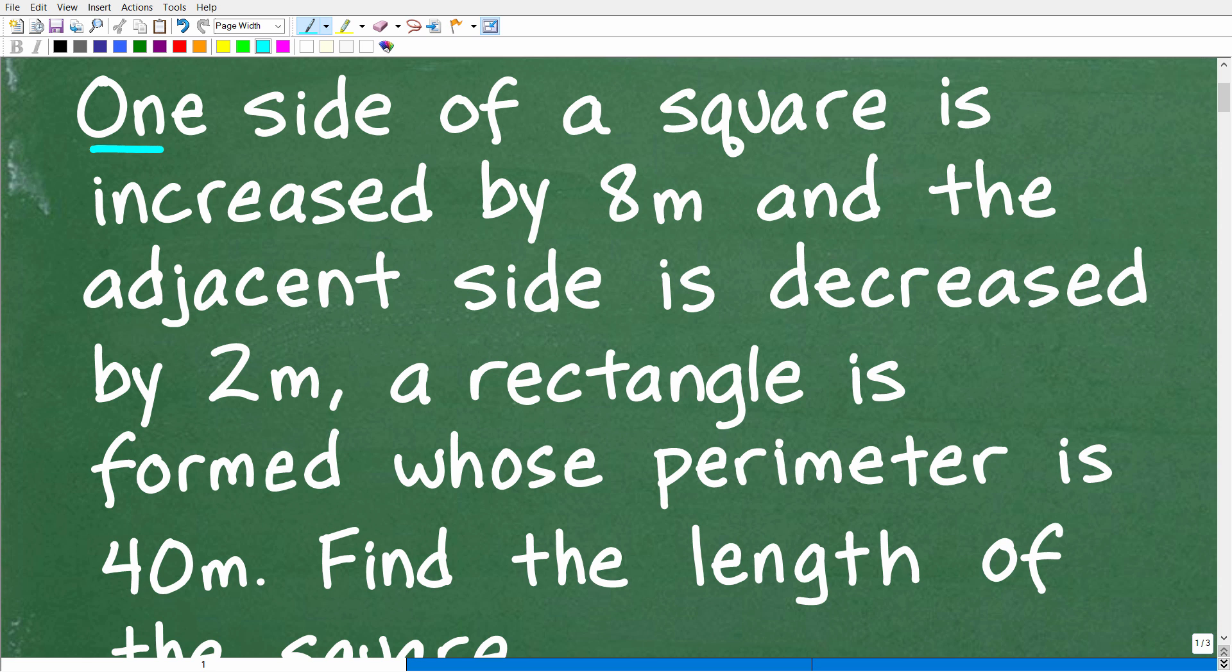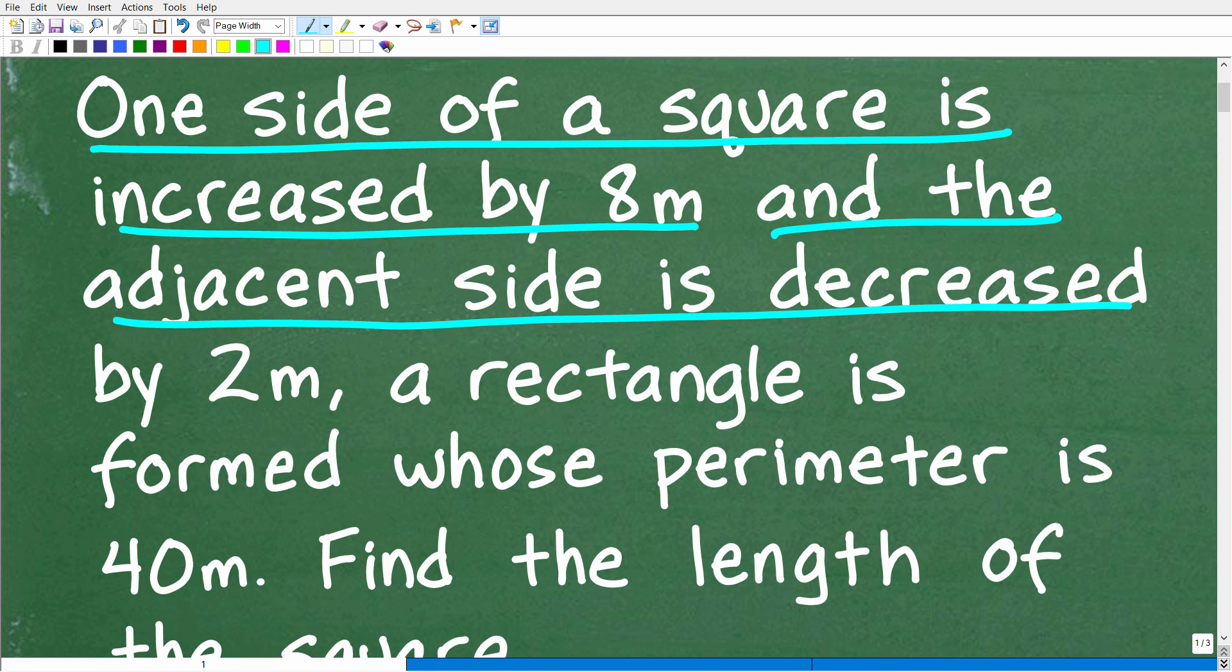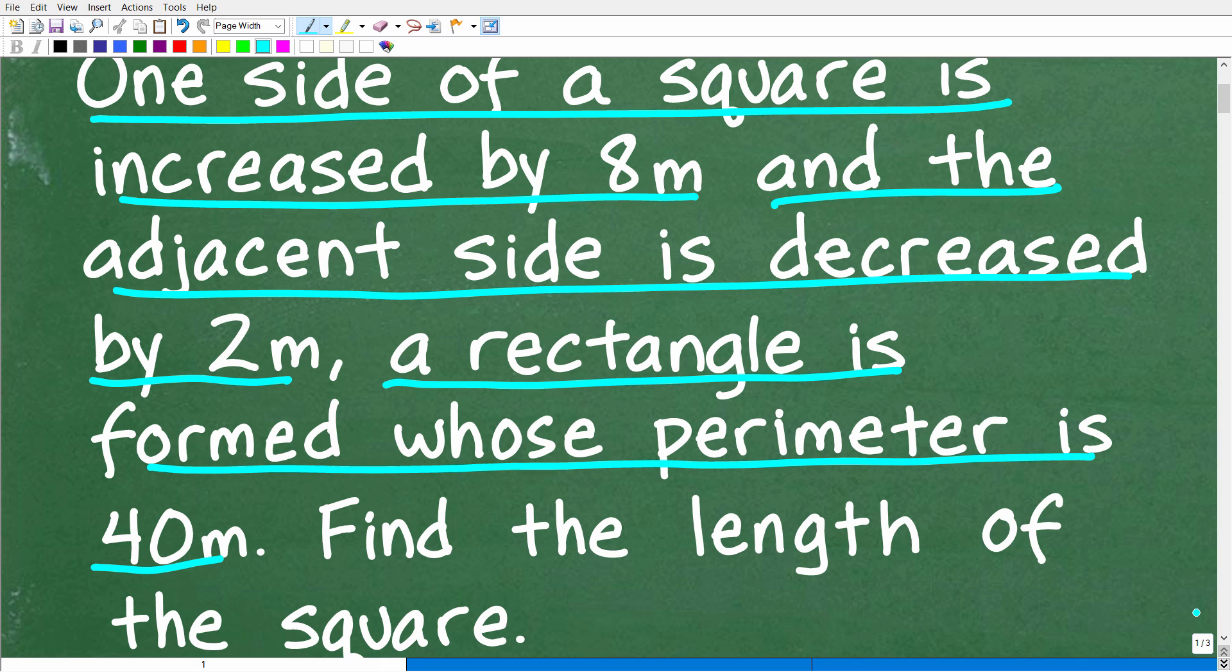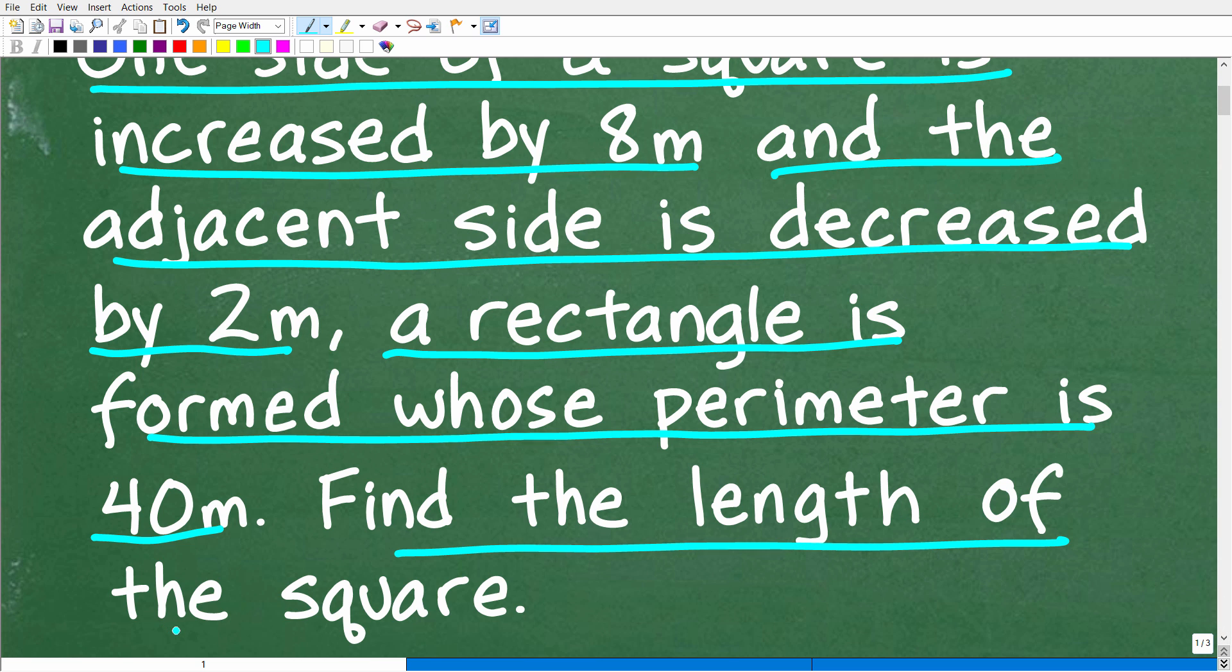One side of a square is increased by 8 meters, and the adjacent side is decreased by 2 meters. The result is a rectangle is formed whose perimeter is 40 meters. So what we want to do here is find the length of the square.